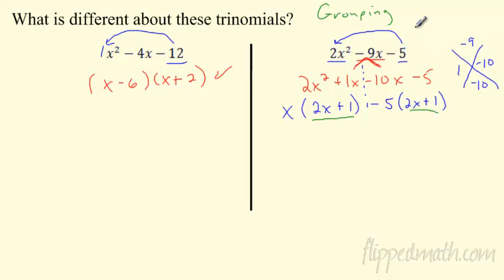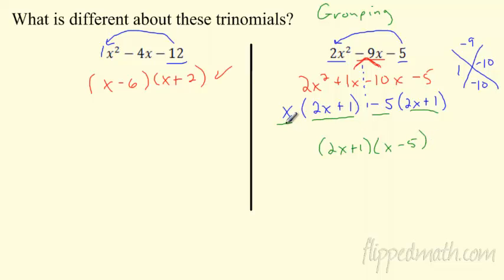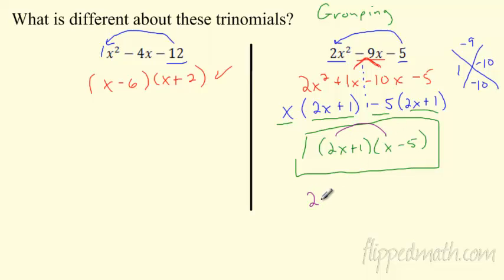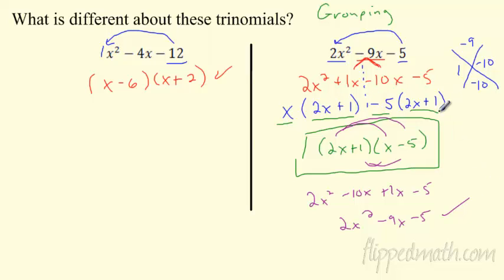That means you're right — if it doesn't happen, start over. Now for the last step: both groups have a term in common, they have 2x plus 1 in common, so you factor that out. What's left? It's x minus 5. So you took 2x plus 1 out of the x term and out of the negative 5 term — and that's this term, it's got to be in parentheses. This is the answer right here. If I double check by multiplying out: 2x squared minus 10x plus 1x minus 5 gives 2x squared minus 9x minus 5. Check — it works.